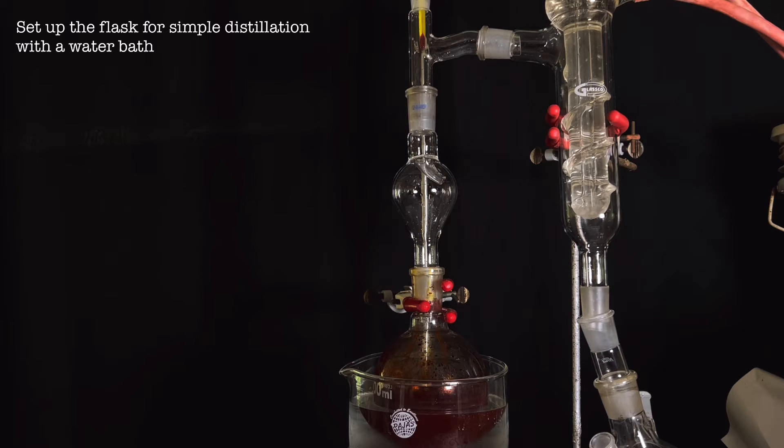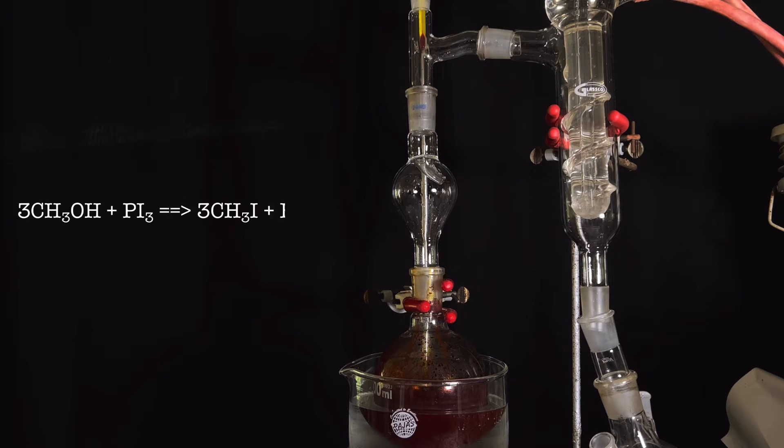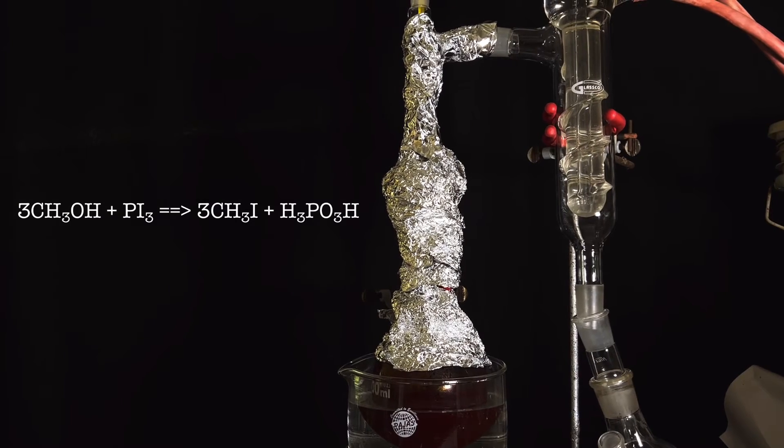Now let us discuss the reaction. The iodine initially reacts with the red phosphorus to form phosphorus triiodide in situ. This in turn reacts with the methanol to form the methyl iodide.